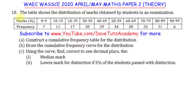This question features the cumulative frequency curve, popularly called OGIF. In the question, we are told that the table shows the distribution of marks obtained by students in an examination. We have those marks and the associated frequencies with each set of marks, and then we are told to construct a cumulative frequency curve.